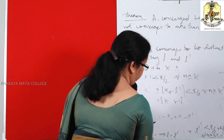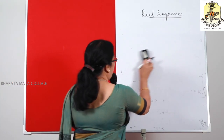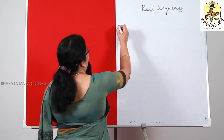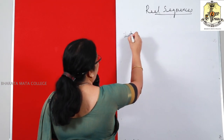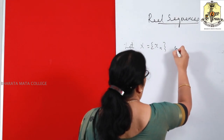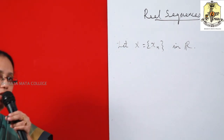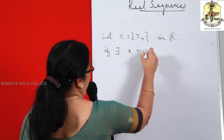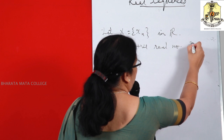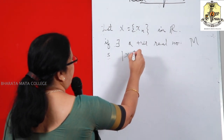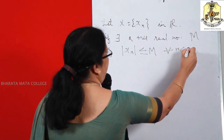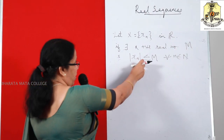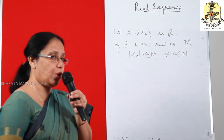Now the second characteristic of convergent sequences is: every convergent sequence is bounded. Before that, we should know what a bounded sequence is. Let X = {X_N} be a sequence in R. The sequence X_N is said to be bounded if there exists a positive real number M — need not be an integer — such that modulus of X_N is less than or equal to M for every N belonging to N. That means for every term of the sequence, modulus of X_N ≤ M. If such an M exists, we say the sequence X_N is bounded.